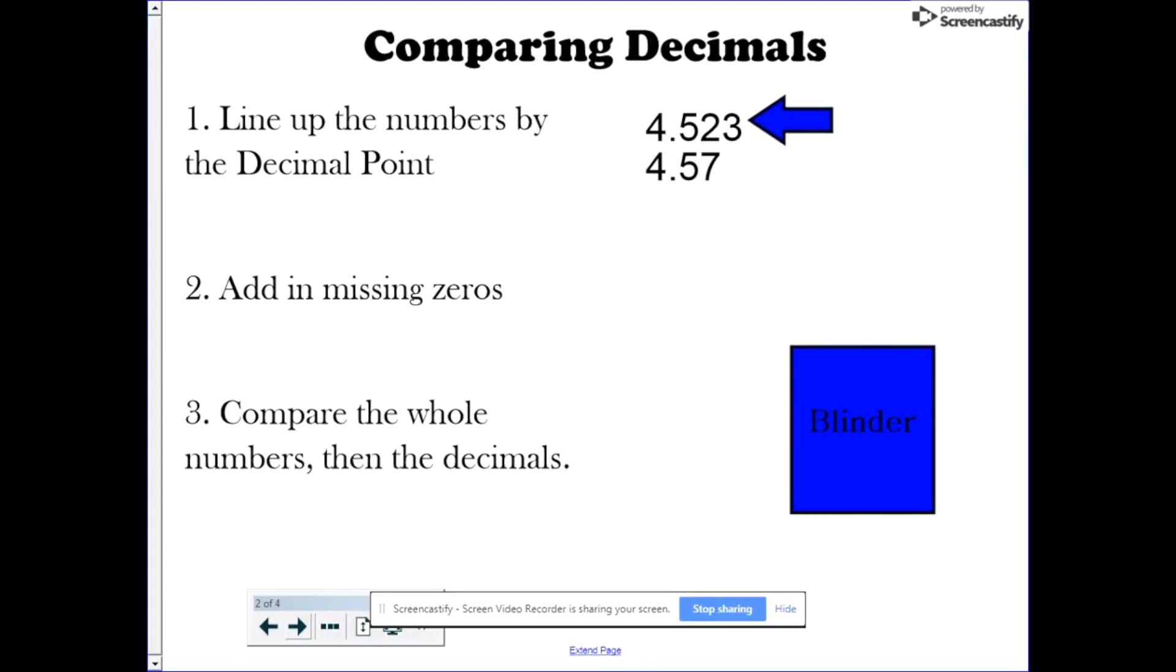For example, in this top number there's a three in the thousandth place. However, there's nothing in the thousandth place in this number. So we're going to put a zero in.